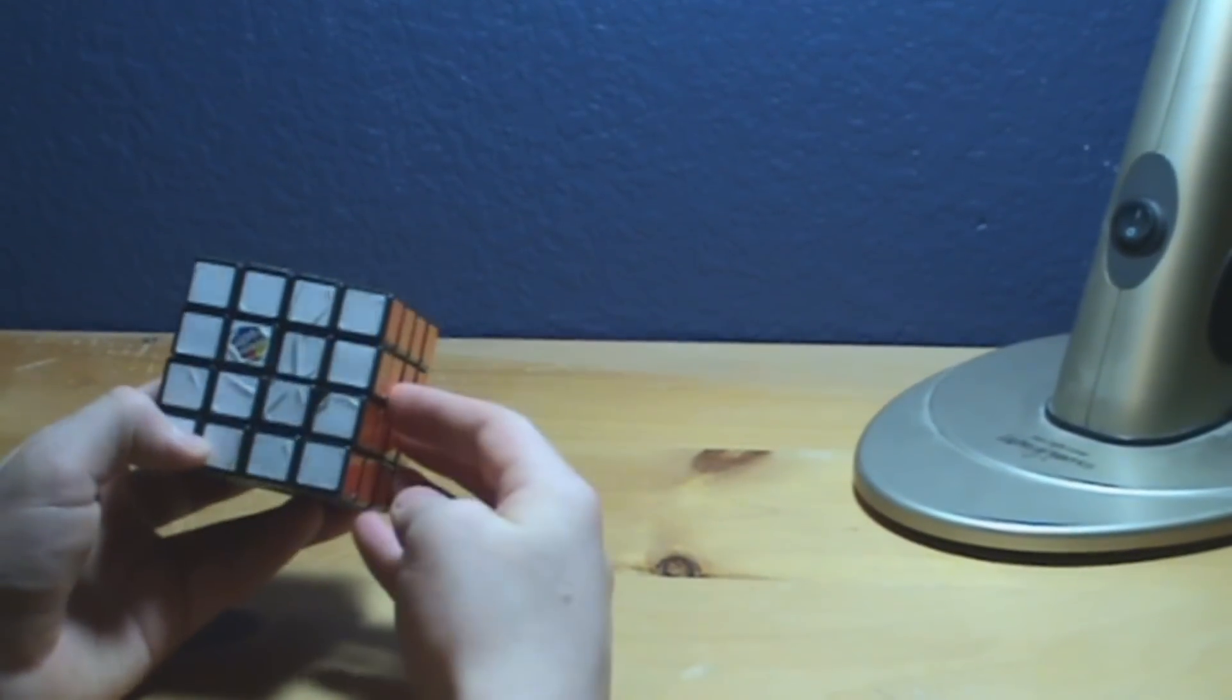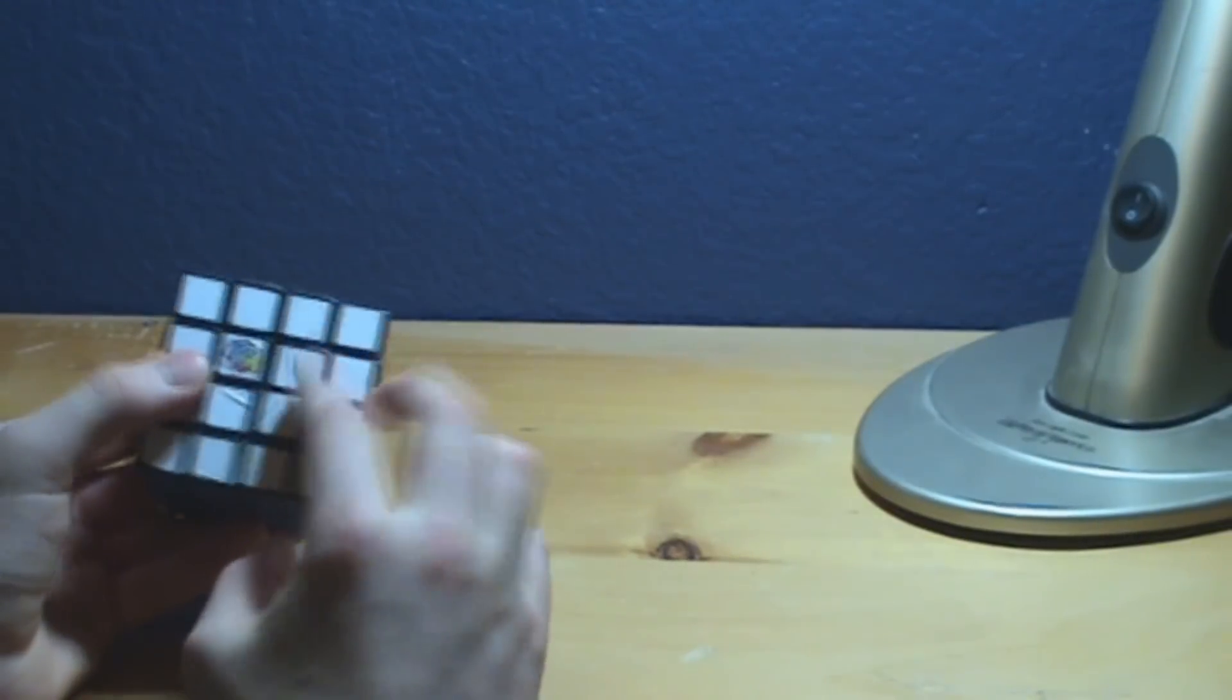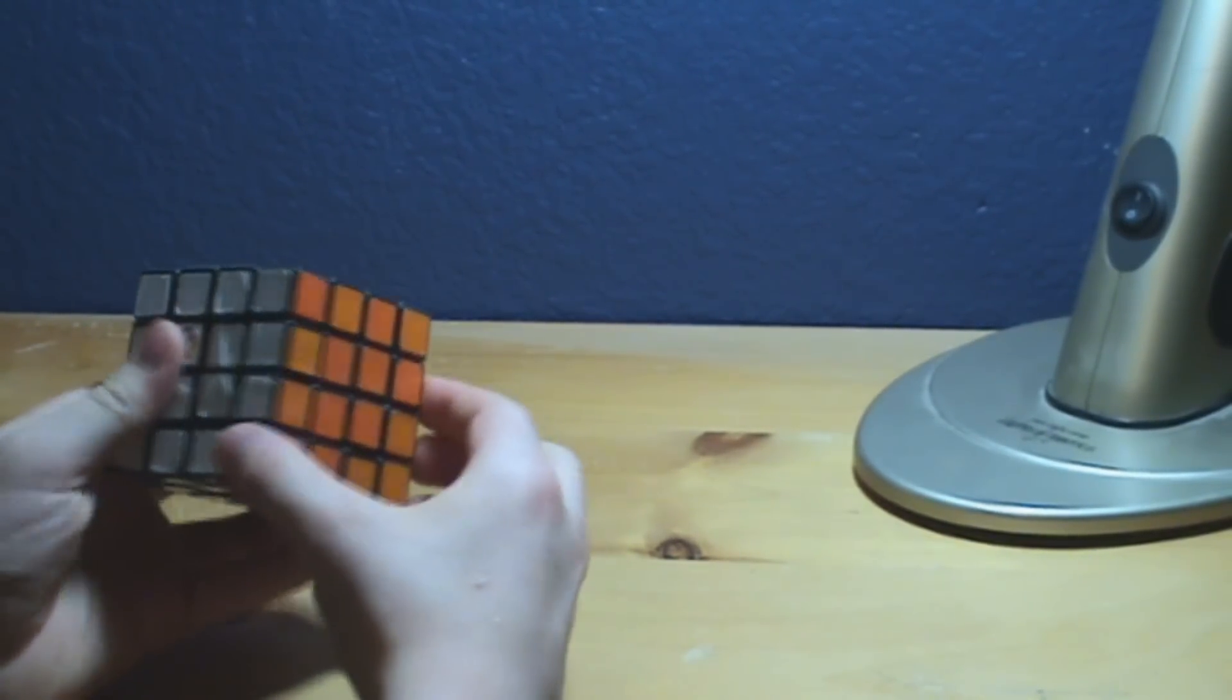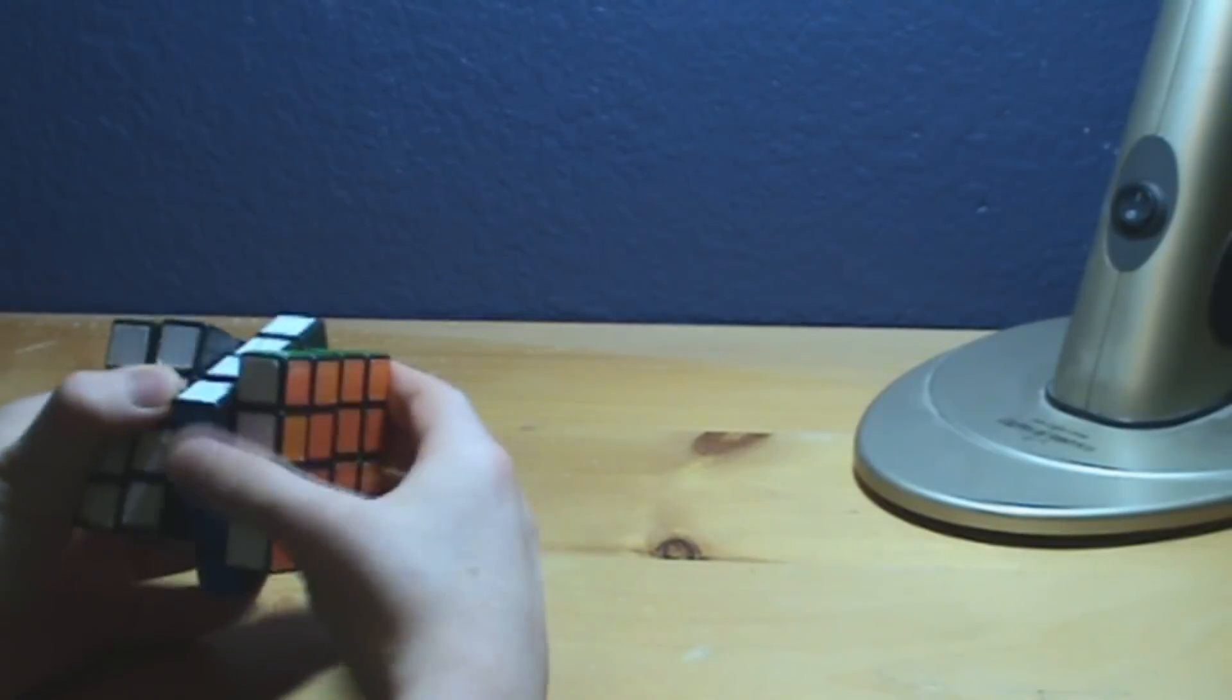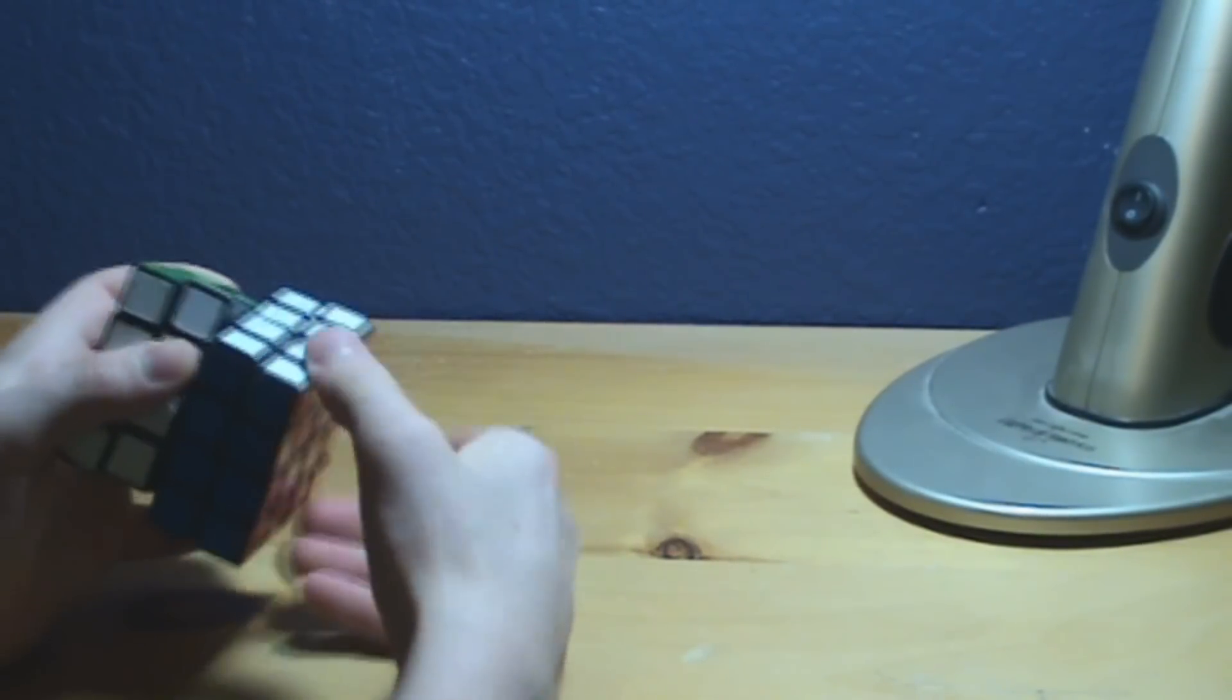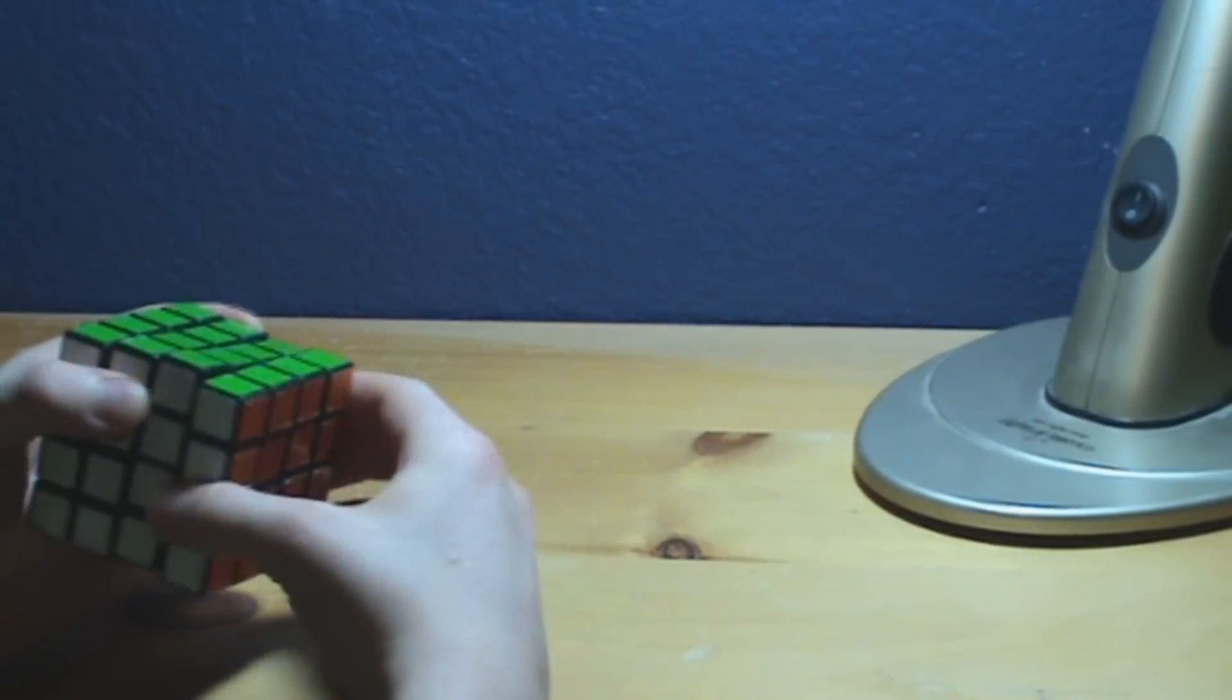Now then, the added notation on a 4x4 is these middle layers. It's the same exact thing as the outer layers, except capitalization. A capital R means the outside. A small r means this inside piece. So, if I just say I have a little r, I would just turn this middle right side piece once, clockwise.